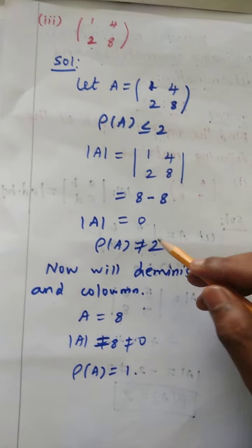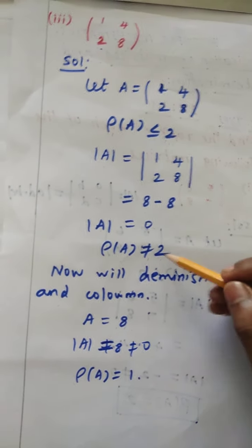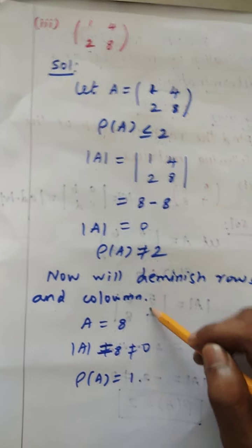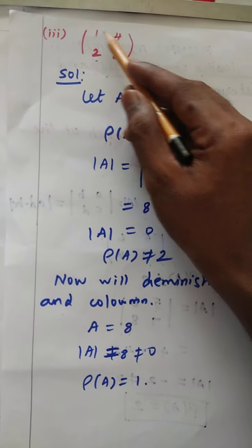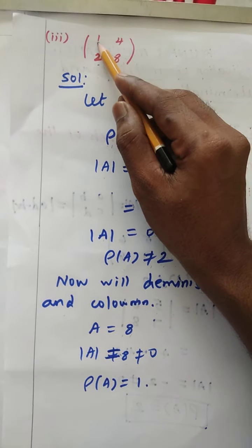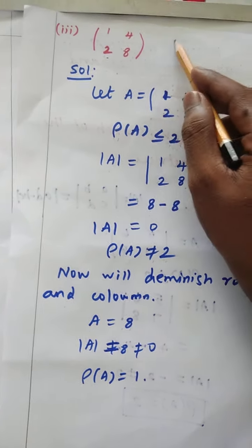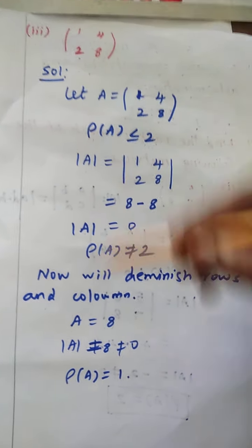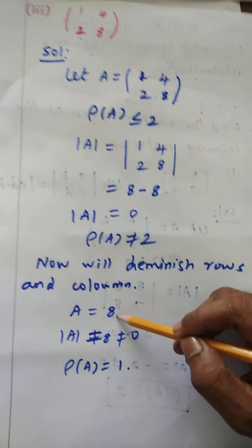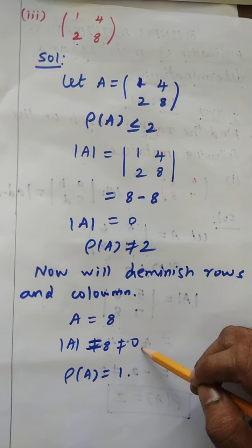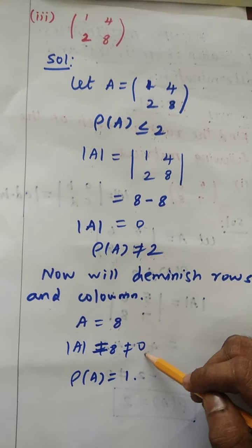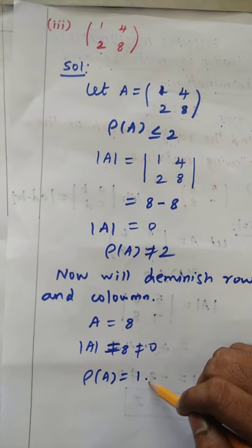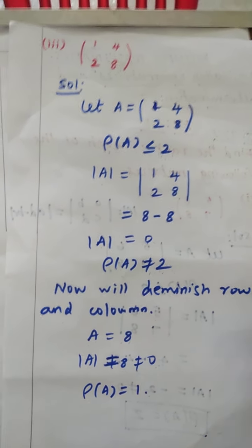So now we go to the next step. Since this is a 2×2 matrix, we diminish the rows and columns. Take the 1×1 element: leave the first row and first column. The cofactor is 8. Determinant A equals 8, which is not equal to 0. So determinant A equals 0 means the rank is 1. Therefore, rank of A equals 1. Thank you.